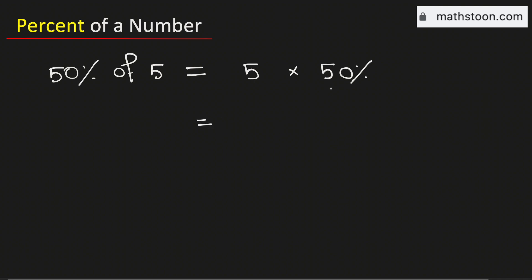We know that 50% can be written as 50 over 100. And this 5 can be written as 5 over 1.